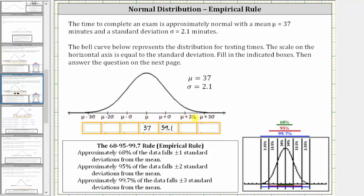Continuing right, mu plus 2 sigma is equal to 39.1 plus 2.1, which is 41.2. And mu plus 3 sigma is equal to 41.2 plus 2.1, which is 43.3.